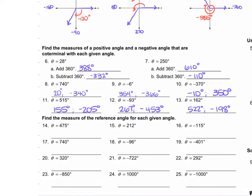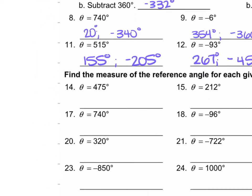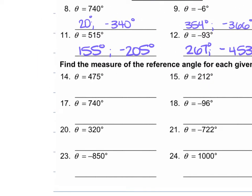For problems 14 through 25, we're finding the measure of the reference angle for each given angle. Remember, you want positive acute angles. For number 14, we have 475. If we subtract 360, we're left with 115 degrees. That's an obtuse angle, so we subtract 180 from it and we're left with 65 degrees. So 180 minus 115 gives us 65 degrees, which is our answer.